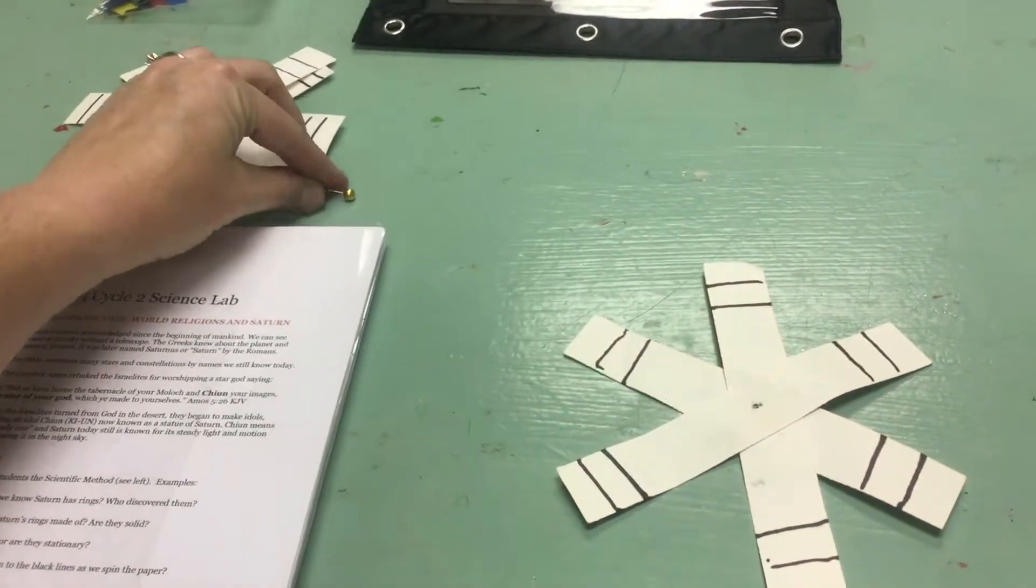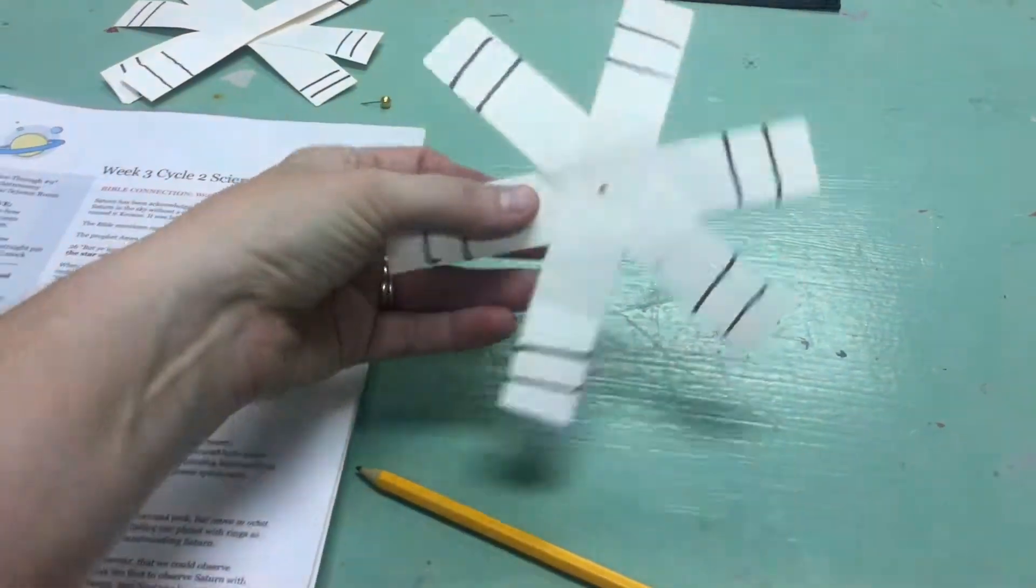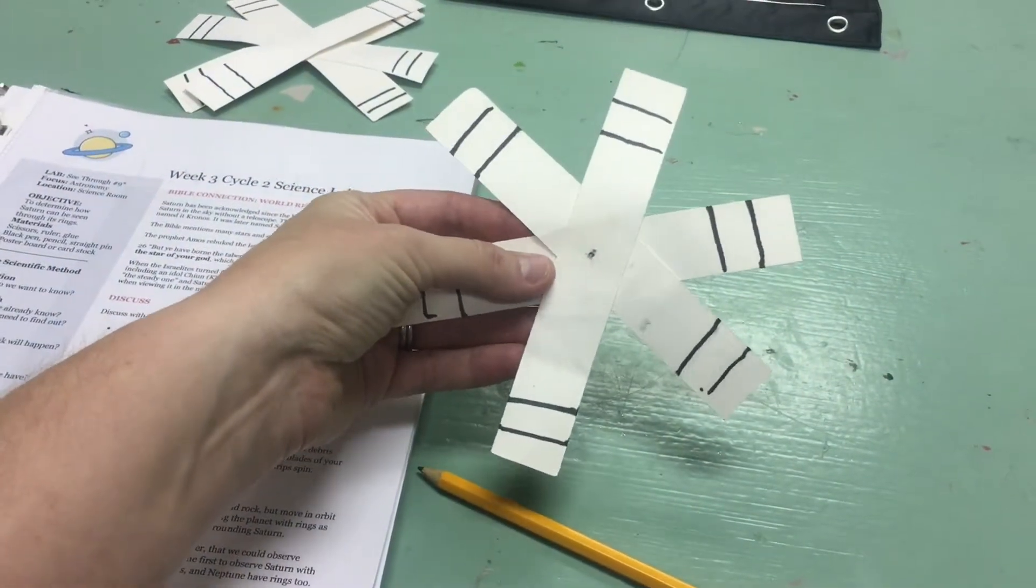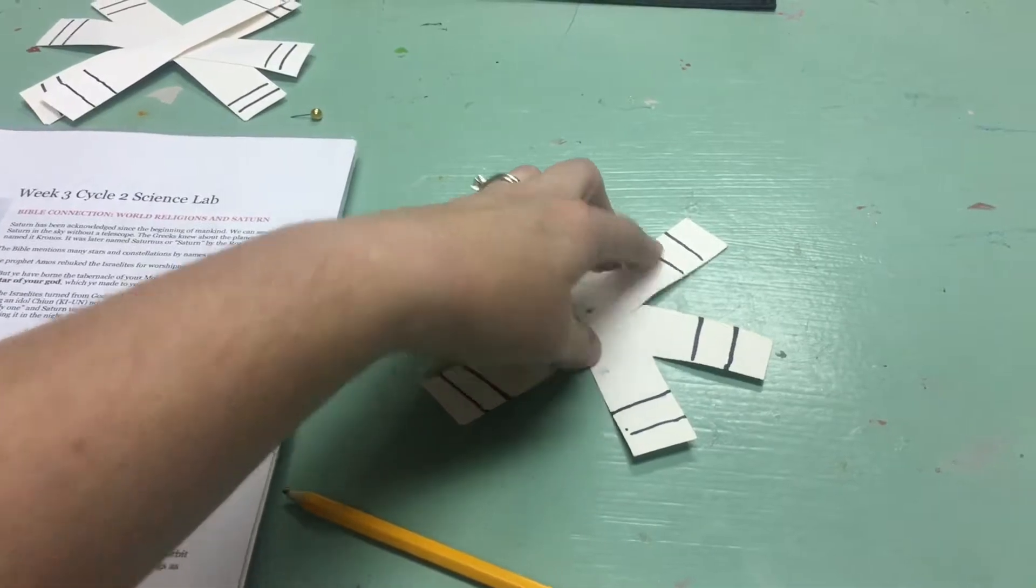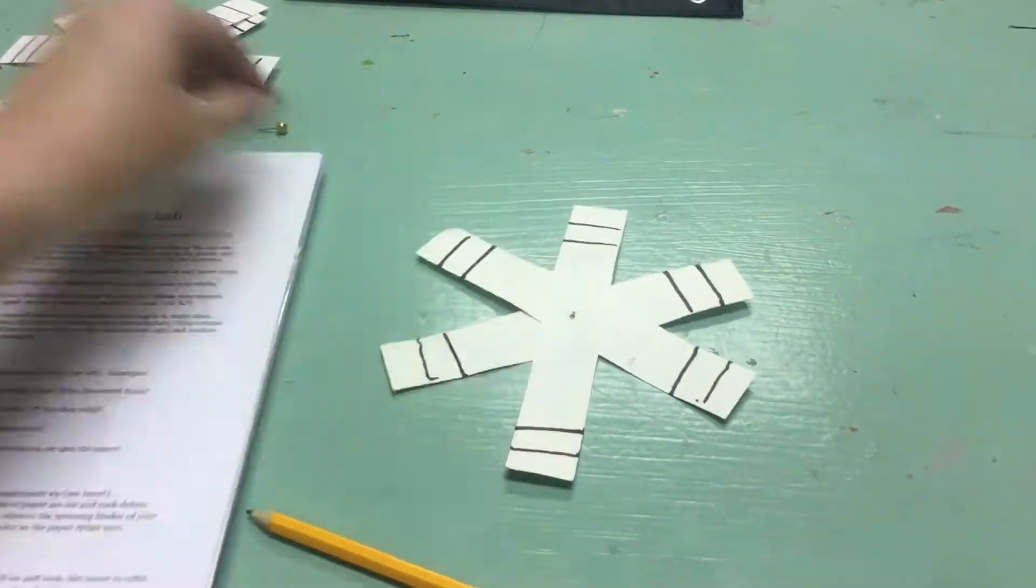For our two youngest classes, I will already have the white strips of paper cut out for you. The students will just draw the black lines all the way across.